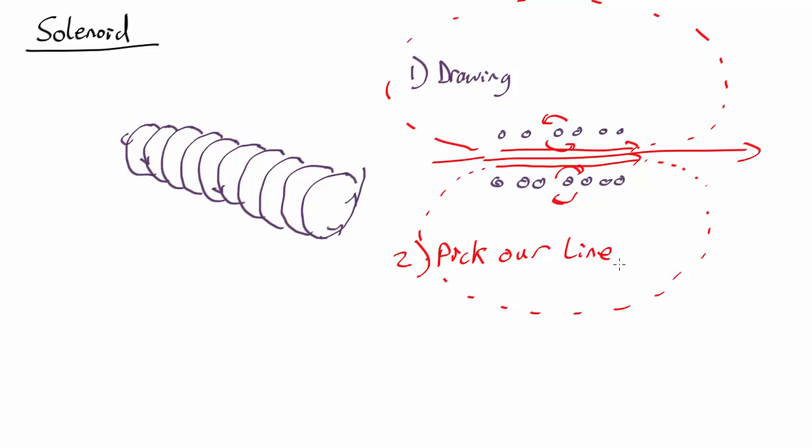Ampere's law is a line integral, so we need to pick a line along which it's going to be fairly easy to calculate the magnetic fields and the length elements. So let's pick a line that's a long way away from the ends of the solenoid and one that goes into the solenoid, along inside the solenoid, straight out, and then back. A rectangle of length r.